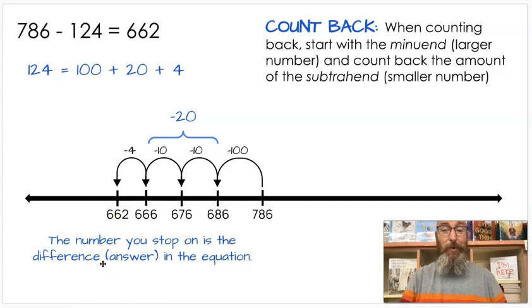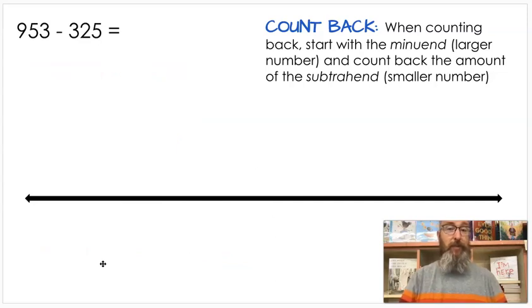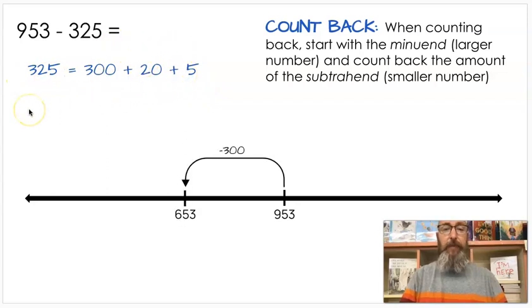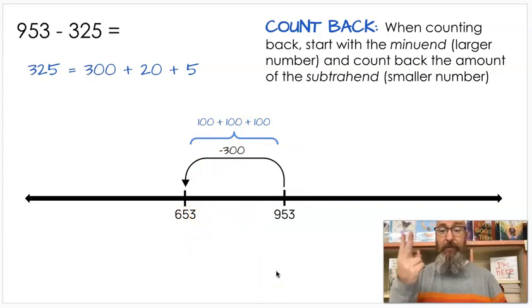Let's do one more. 953 minus 325. Again, counting back. When you're counting back, you start with the minuend, the larger number, count back the amount of the subtrahend, smaller number. I'm going to place my 953 towards the end of my number line. I'm going to break 325 into 320 and 5. My jumps are going to be 320 and 5. So I'm going to jump my 300 first. 900 minus 300 is 600, so that'd be 653. And of course, that's 300 jumps. 953 minus 100, 853, 753, 653. That's why that works.